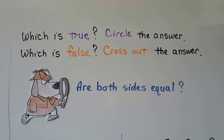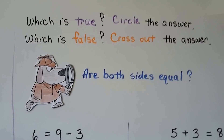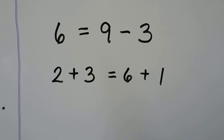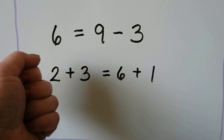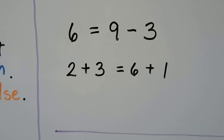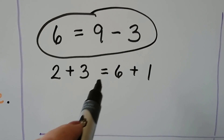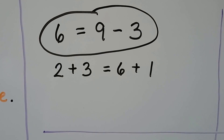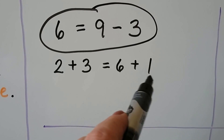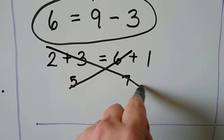Which is true? Circle the answer. Which is false? Cross out the answer. Are both sides equal? 6 is equal to 9 minus 3 — let's start at the 9 and count back 3: 9, 8, 7, 6. Yes, 6 is equal to 9 minus 3, so we're going to circle this one because it's true. 2 plus 3 is equal to 6 plus 1 — 2 plus 3 is equal to 5, and 6 plus 1 is equal to 7. This one equals 5 and this one equals 7, so that's false.